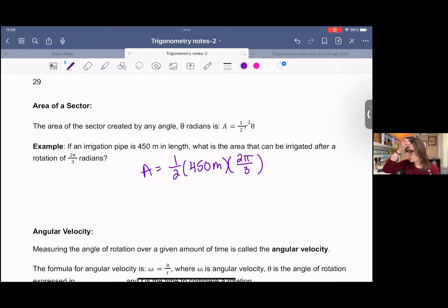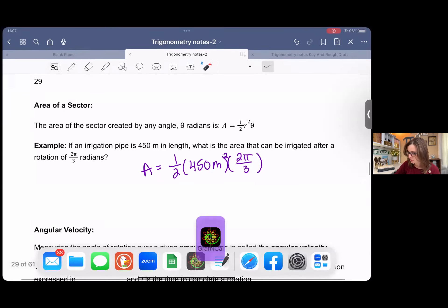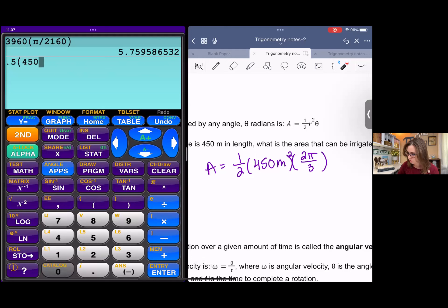And then we can just get an approximation of this by typing it in and getting the decimal answer. I forgot the little squared in my formula. So make sure you don't forget that. And then we're going to type this in.